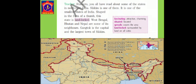Teacher: You all have read about some of the states in northeast India. Sikkim is one of them. It is one of the smallest states of India, shaped in the form of a thumb. This state is landlocked. West Bengal, Bhutan and Nepal are some of its neighbors. Gangtok is the capital and the largest town of Sikkim. Children, 'landlocked' means surrounded by land on all sides.